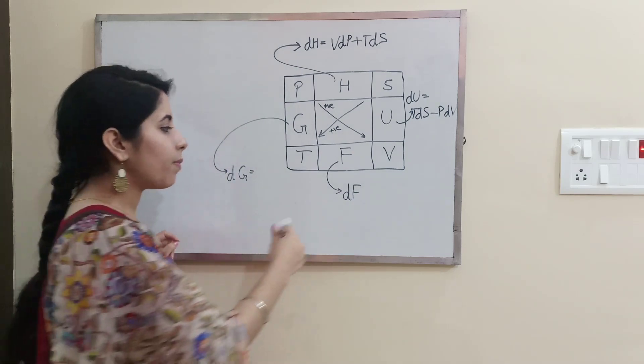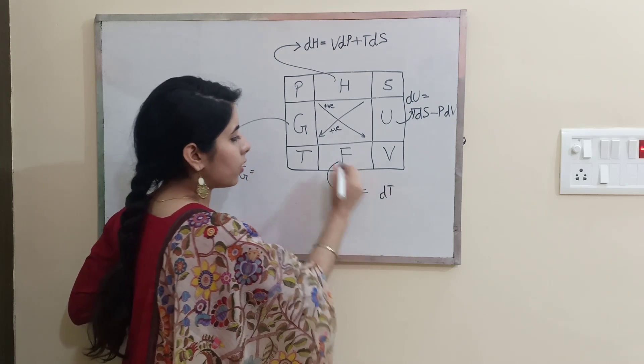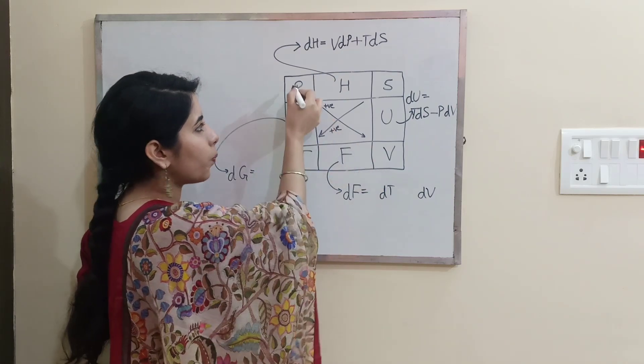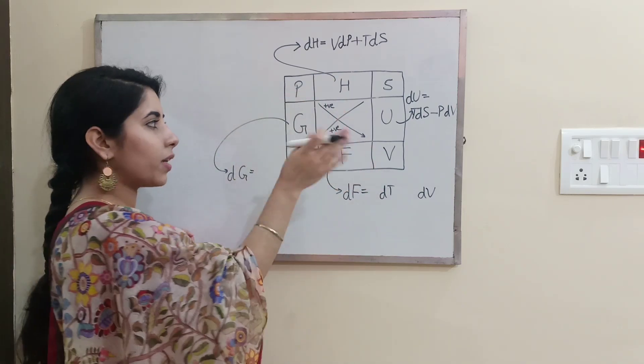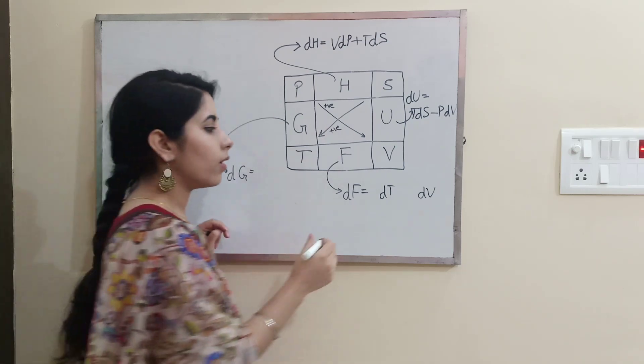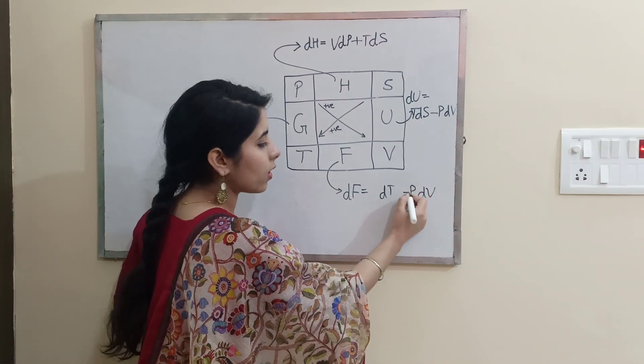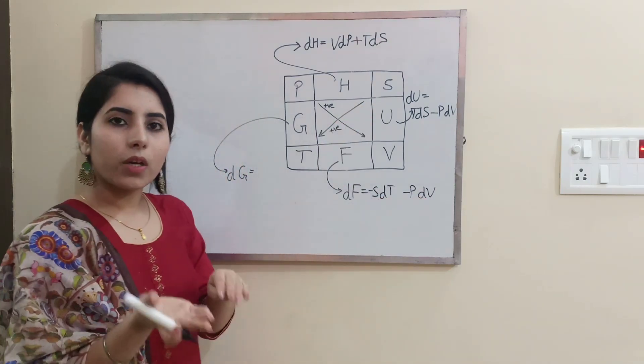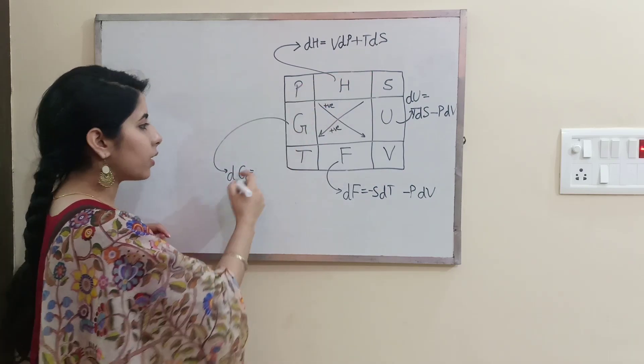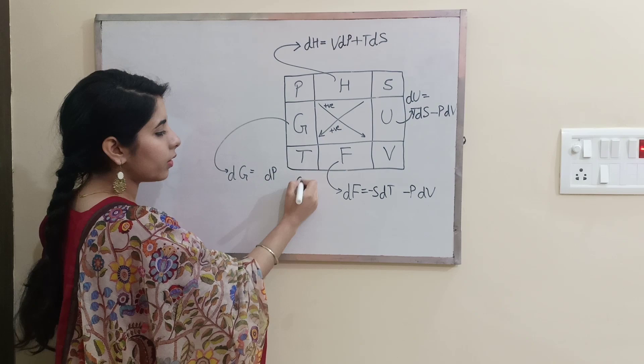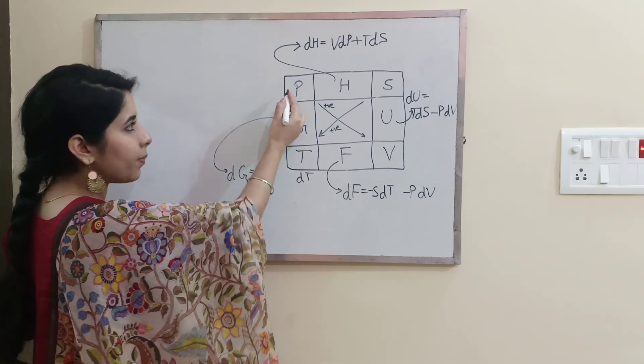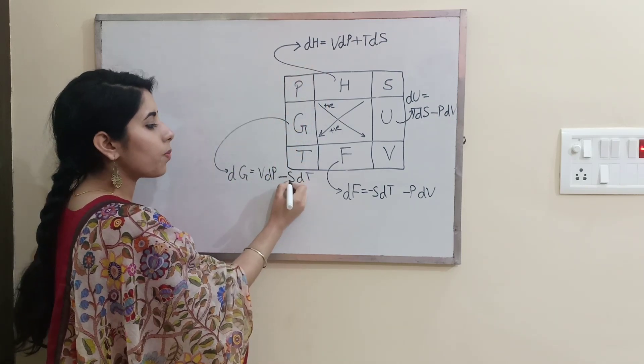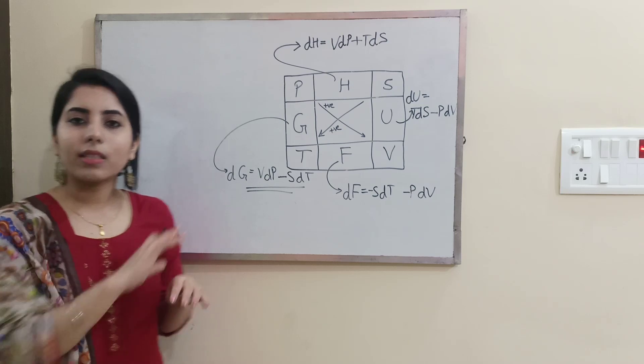In the same way I will write for df and dg. Neighbors dt and dv. After that, you are moving from dv to p - it's opposite direction, not from up to down but from lower to above point, so it's going to be dv and p negative, and dt and s negative because we are moving from lower point to higher point. Now next, dg: neighbors dp dt, then dp to v positive, then dt to s negative - minus sdt.